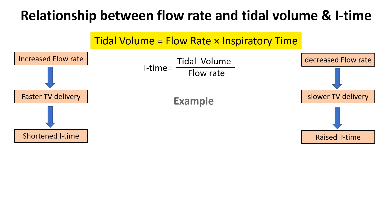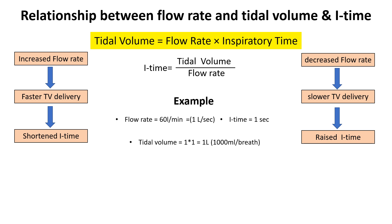Suppose a ventilator has a flow rate of 60 liters per minute and an inspiratory time of 1 second. Since 60 liters per minute equals 1 liter per second, the tidal volume delivered would be 1 liter. If the inspiratory time is increased to 1.5 seconds, the tidal volume would be 1.5 liters.